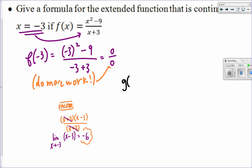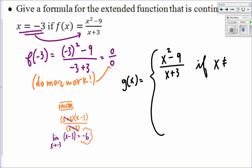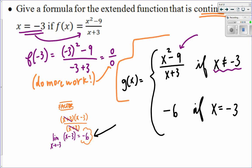So g of x is equal to, it's going to be two pieces. It's going to be that same original thing, x squared minus nine over x plus three, if x is not equal to negative three. I'm basically going to be this curve everywhere but negative three. And then I'm going to be, well, remember we said the limit was negative six. So I'm going to be negative six if x is equal to negative three. This definition gives me a continuous function everywhere on its domain.